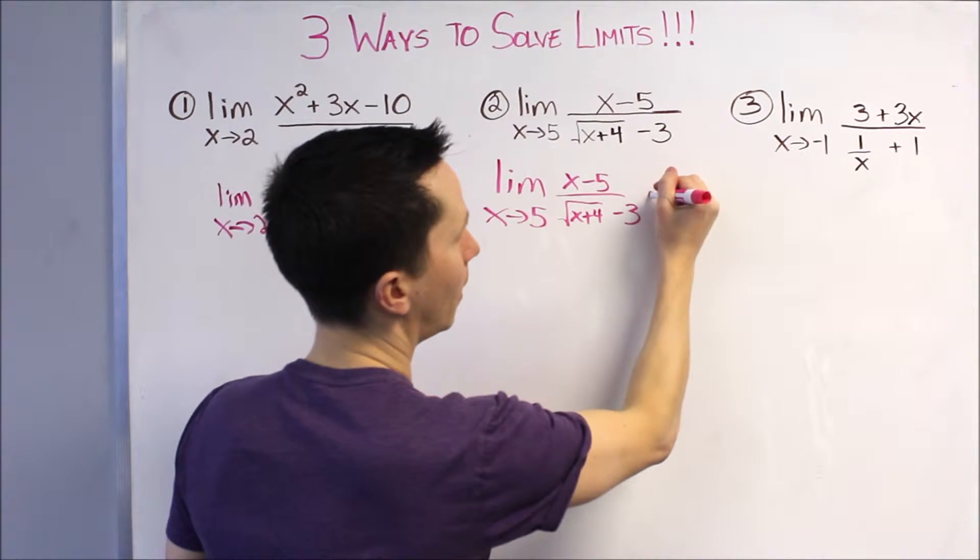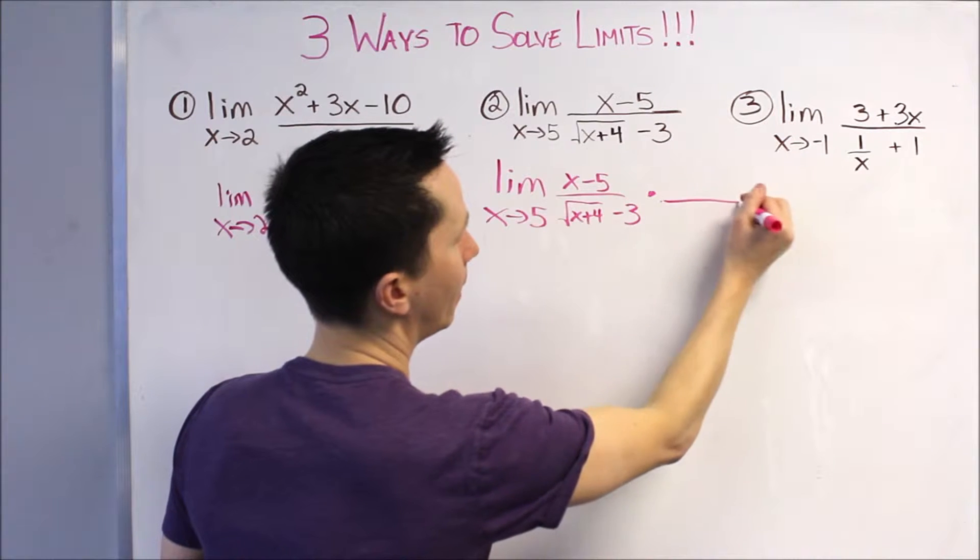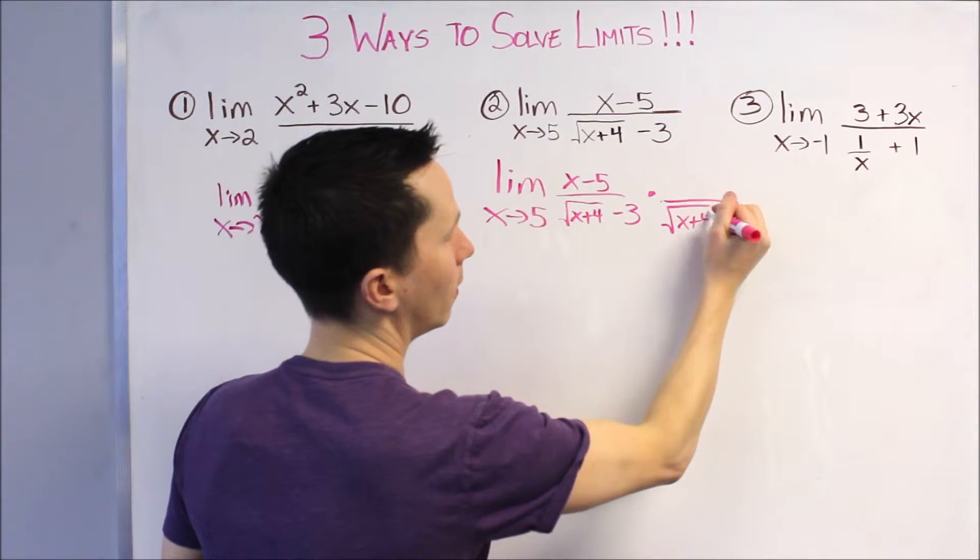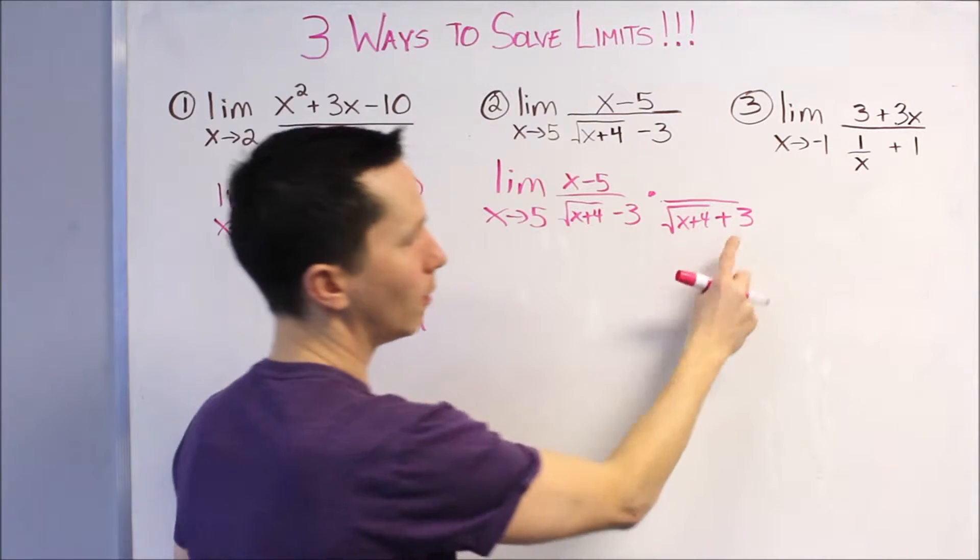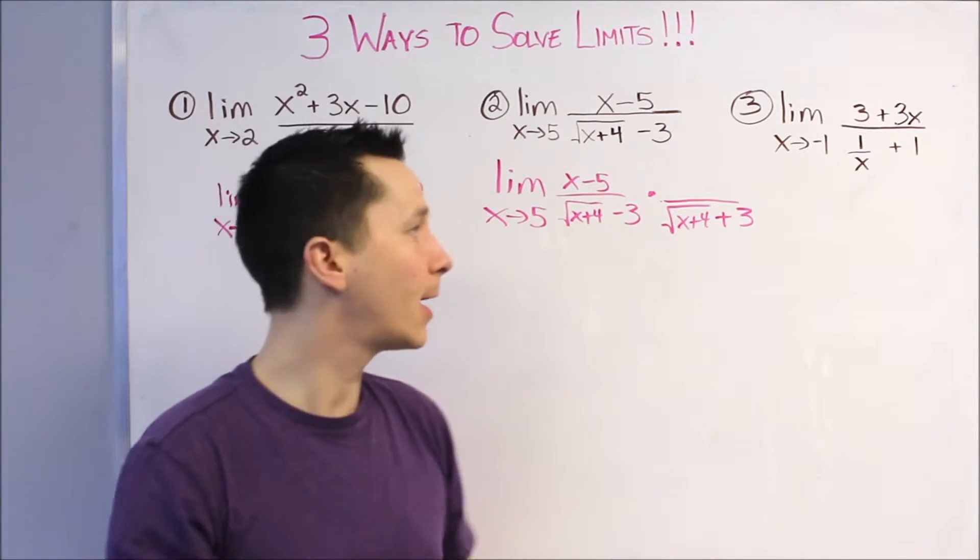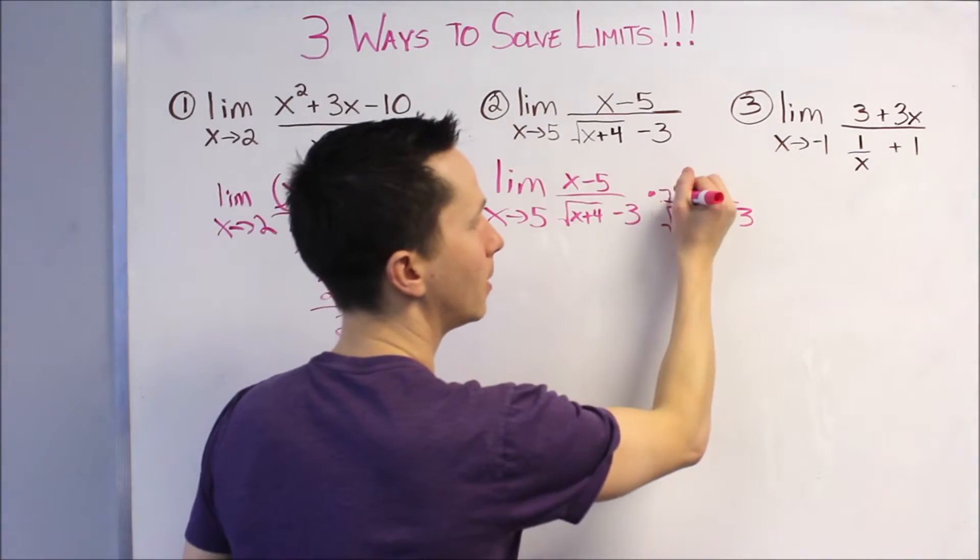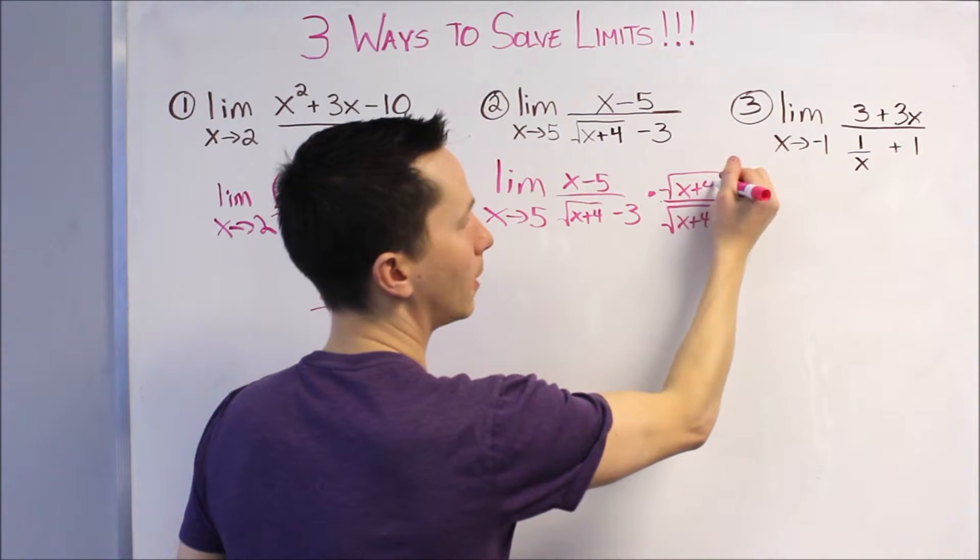And, I'm going to multiply by the square root of X plus 4 plus 3. Notice the plus is just different from the minus. Everything else is the exact same. As long as we do the same to the top, we're allowed to do it.